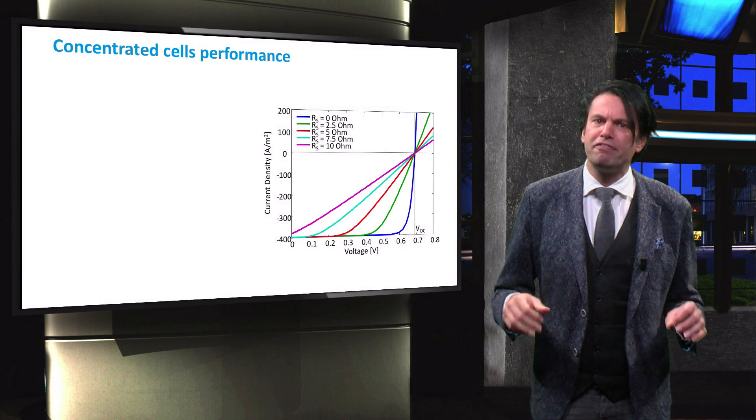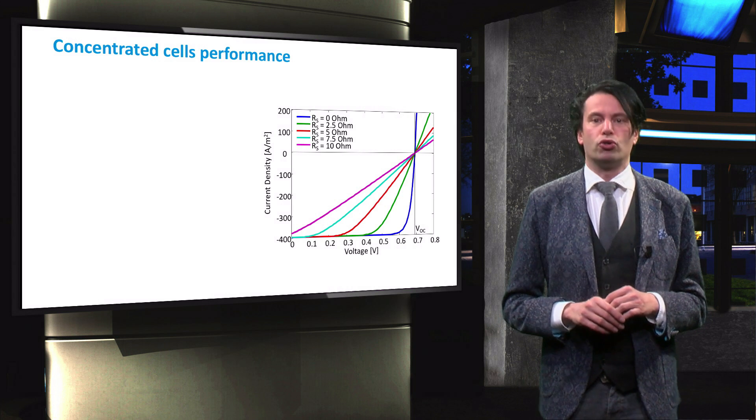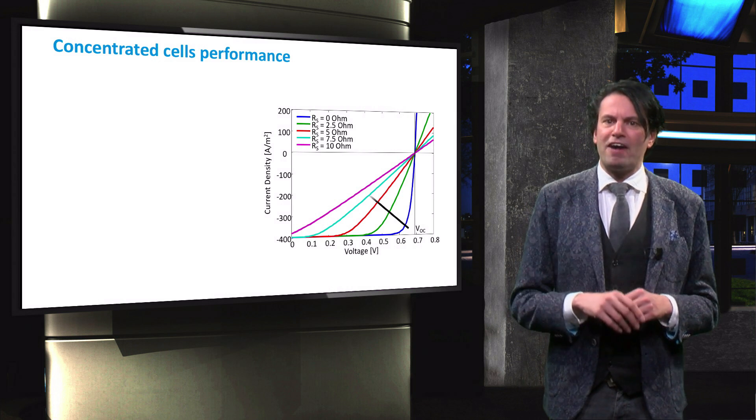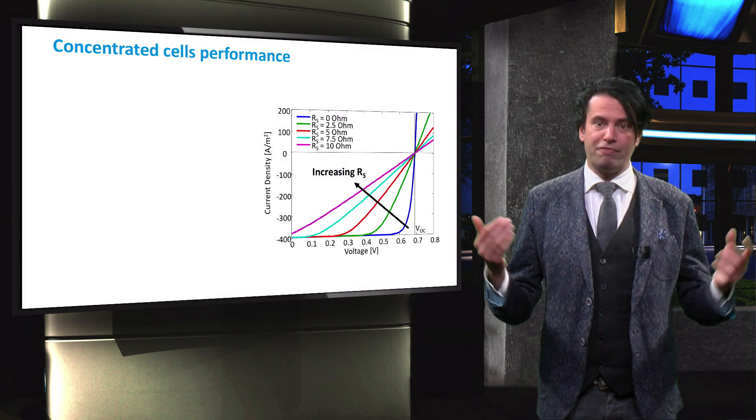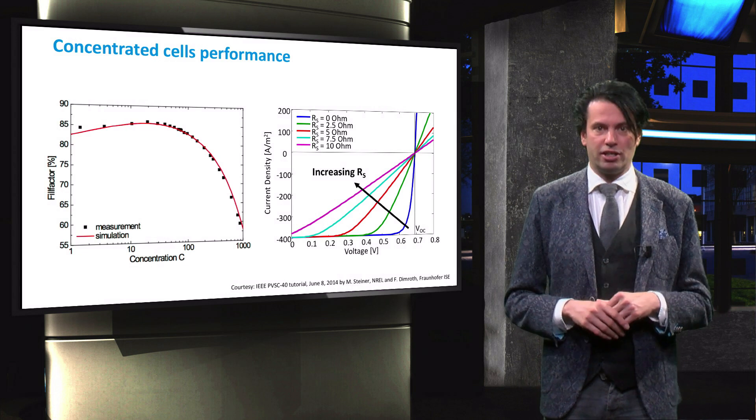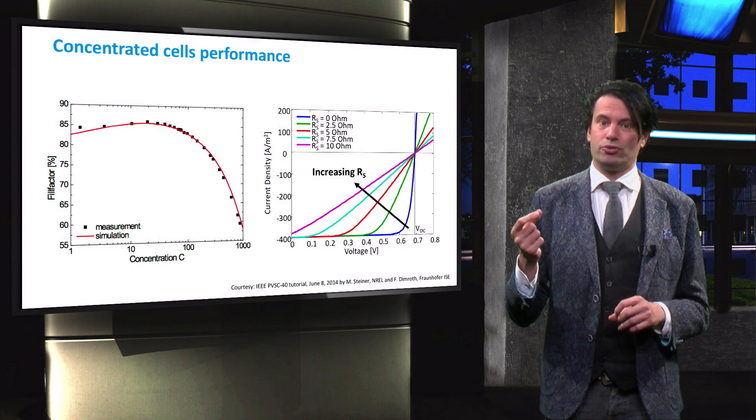This figure shows the effect of an increasing series resistance on the JV curve of a solar cell. The fill factor of the solar cell decreases strongly with increasing series resistance. This effect explains the shape of this curve.